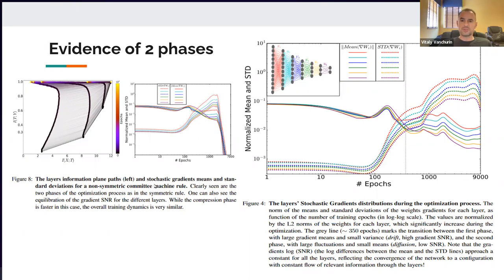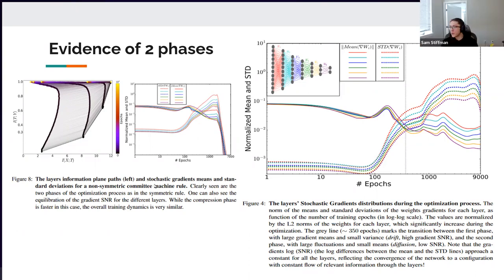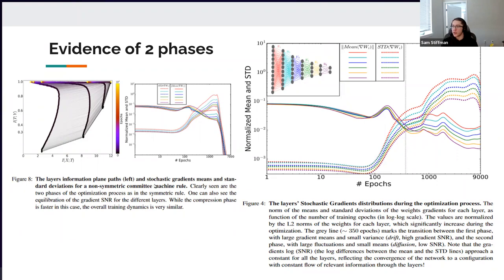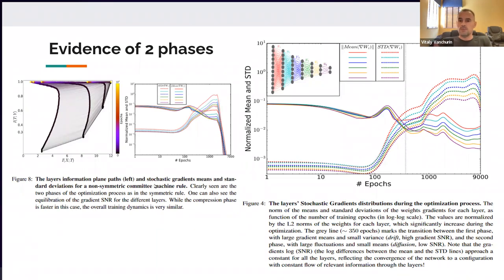The instructor asked about using the Fokker-Planck equation throughout rather than just in the diffusion-dominated regime. The Fokker-Planck equation has both a drift term and a diffusion term, so it can describe the whole evolution. Sam noted he doesn't know much about Fokker-Planck, but the instructor explained that at early times the drift term dominates; at late times both terms become comparable; and by randomness you can find a better minimum.